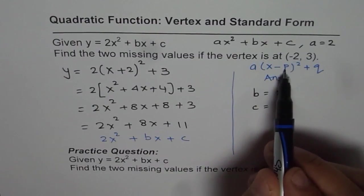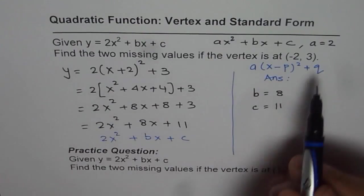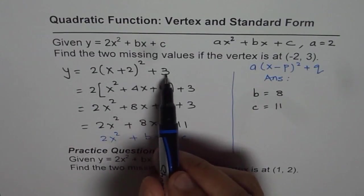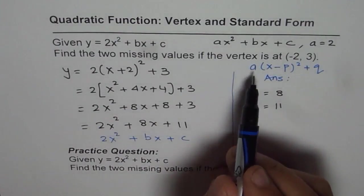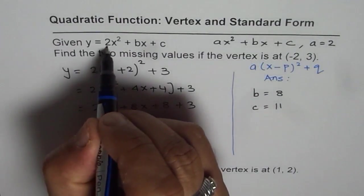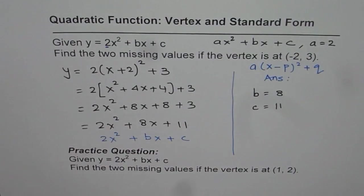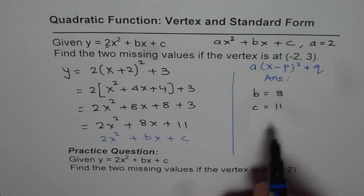Now since (-2, 3) is the vertex, if I replace p with -2, I get x plus 2, and q by 3, I get plus 3 here. I have taken value of a as 2 since we have to compare with the given equation. And then you can expand and compare the terms to get the answer.